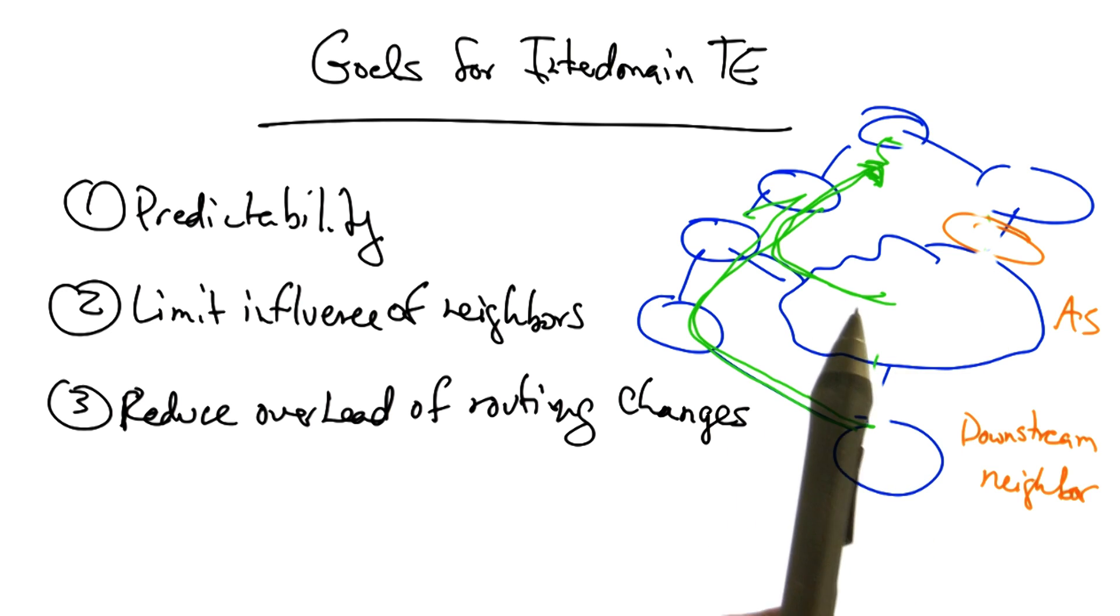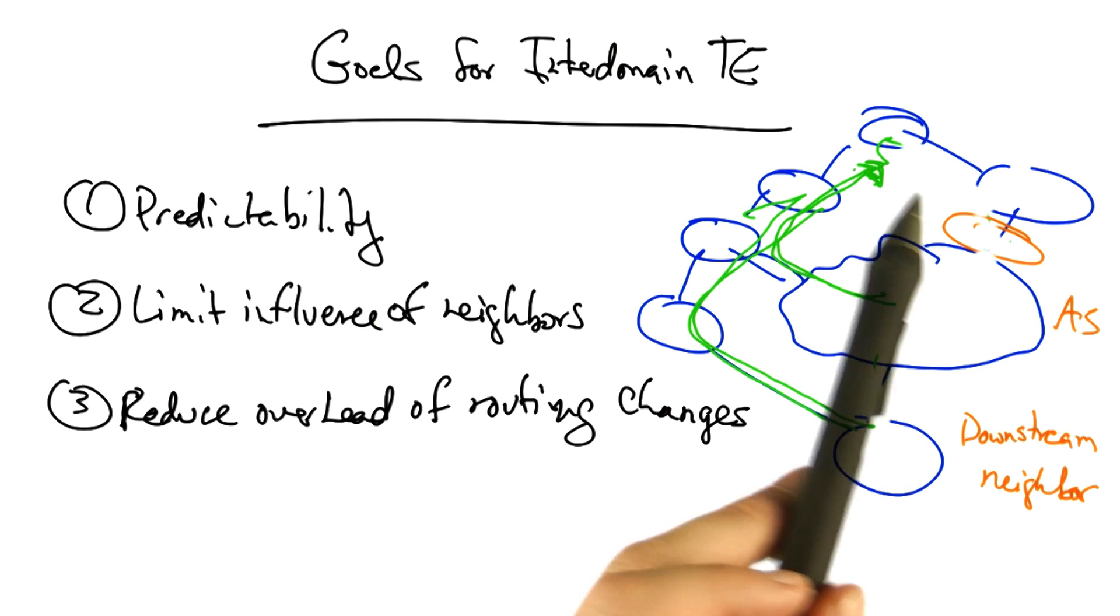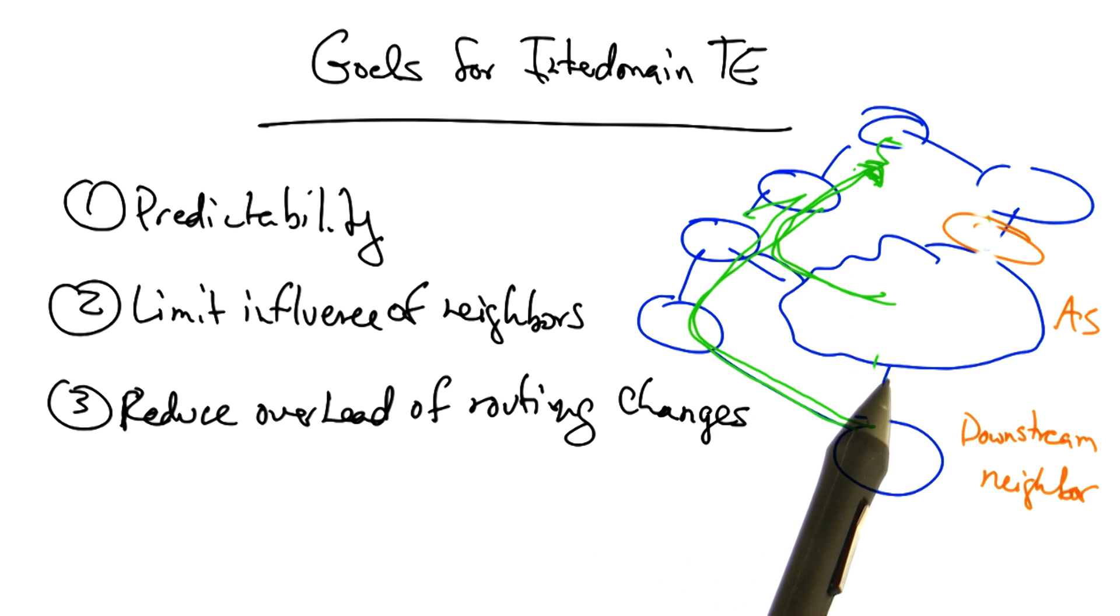In particular, note that this change caused a change in the AS path length of the advertisement to this particular destination from two to three. Thus, other neighbors, such as the downstream neighbor here, might decide to use an alternate path as a result of that globally visible routing change. By avoiding these types of globally visible changes, we can achieve predictability.